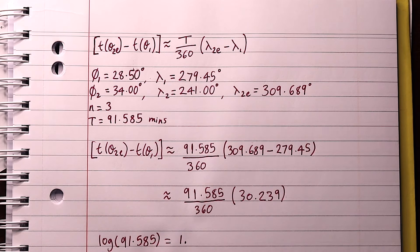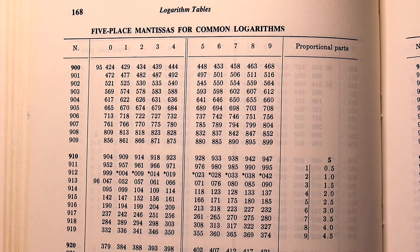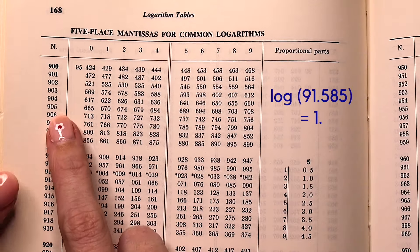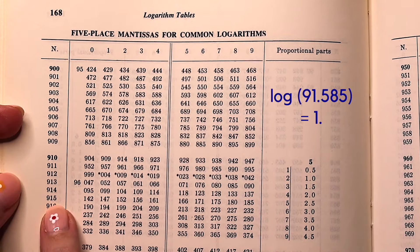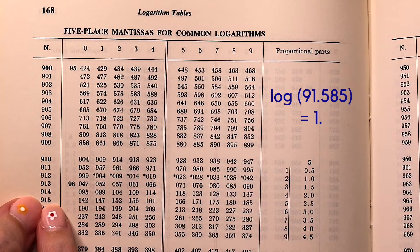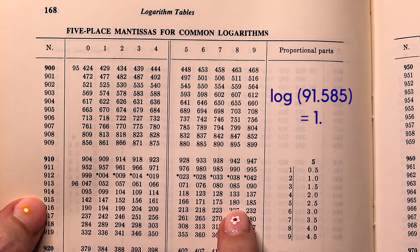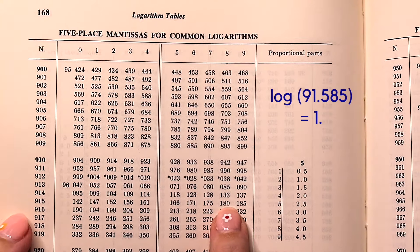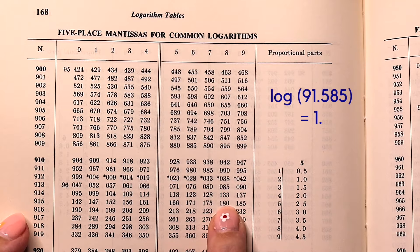To find the rest, we go to the table. This is a five place log table and we're looking for 91585. The first three digits are here. We come down to 915, then across to 8.